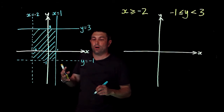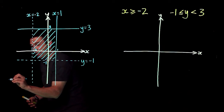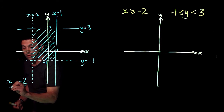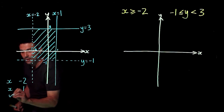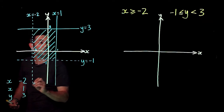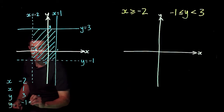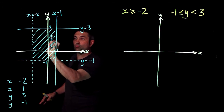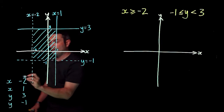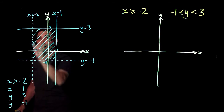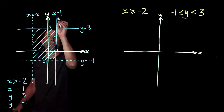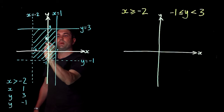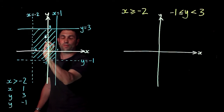To write inequalities, I rewrite all these lines but replace the equals sign with an inequality sign. For y and minus one: the shaded bit is just to the right of that line, so it's greater than, and because it's dotted that means it's just greater than. For the x equals one line, the shaded bit is to the left of the line, so it's less than.